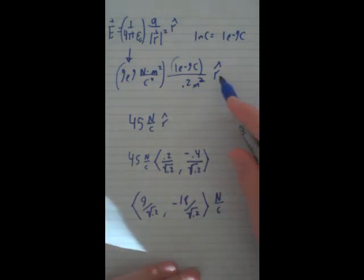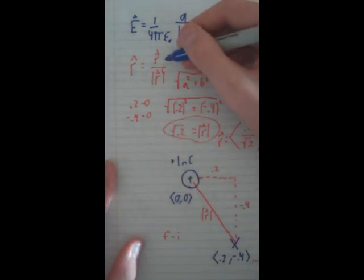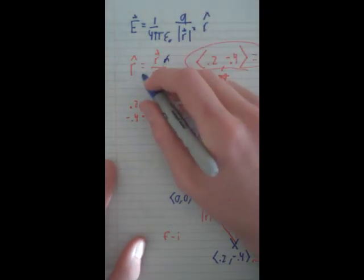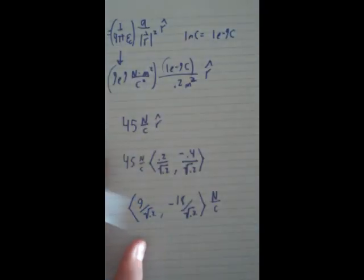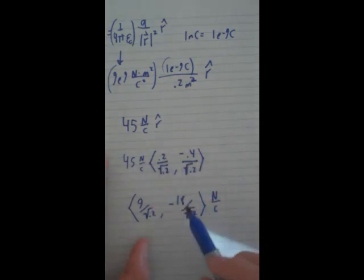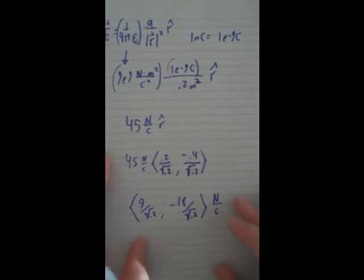An important thing to remember is that r̂ doesn't have any units. When we look at it, the units of this are meters and the units of this are meters, so they will cancel out. So r̂ is unitless, it's just our direction. Since this doesn't have any units and this does, this will be our end product and our electric field.